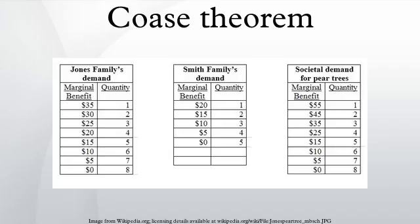Of course, the parties themselves would care who was granted the rights initially because this allocation would impact their wealth, but the end result of who broadcasts would not change because the parties would trade to the outcome that was overall most efficient. This counter-intuitive insight is that the initial imposition of legal entitlement is irrelevant because the parties will eventually reach the same result.